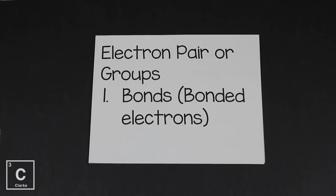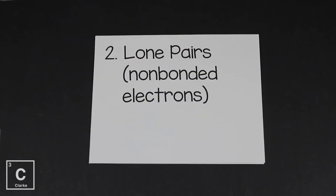Electron pairs or electron groups can be the electrons that are part of the bond. Remember, it takes two electrons to make one bond — that's an electron group or electron pair. Also, the lone pairs — those non-bonding electrons — we also consider those electron groups. So remember: two types of electron groups — the electrons within the bond and the electrons in the lone pair, the non-bonding pair.